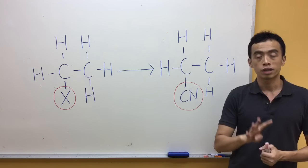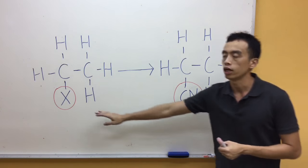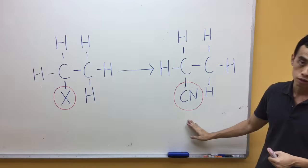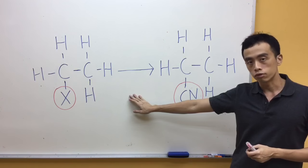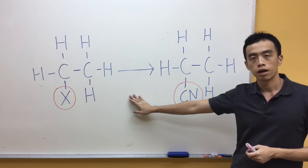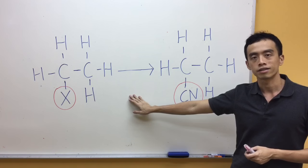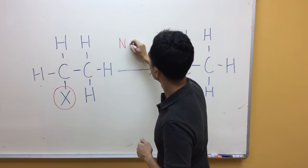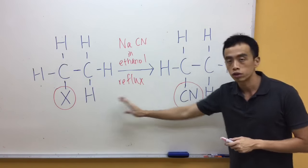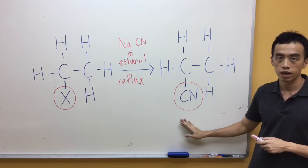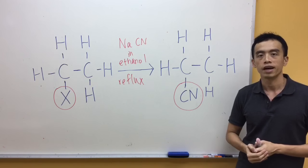Now reaction number four: we have the nucleophilic substitution of our halogen to a nitrile functional group. The reagents and conditions for this conversion are NaCN in ethanol, reflux.